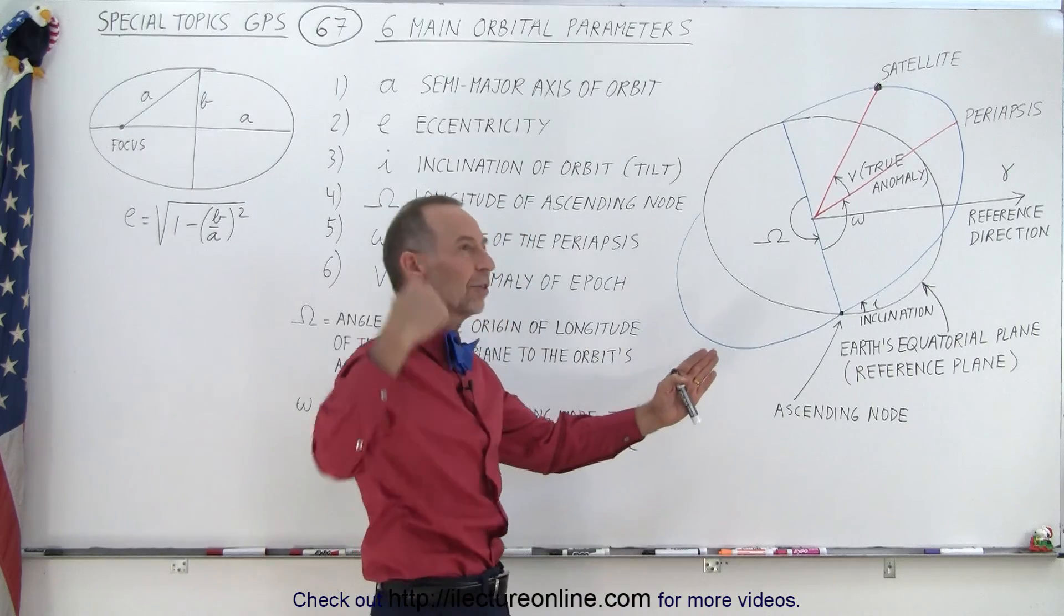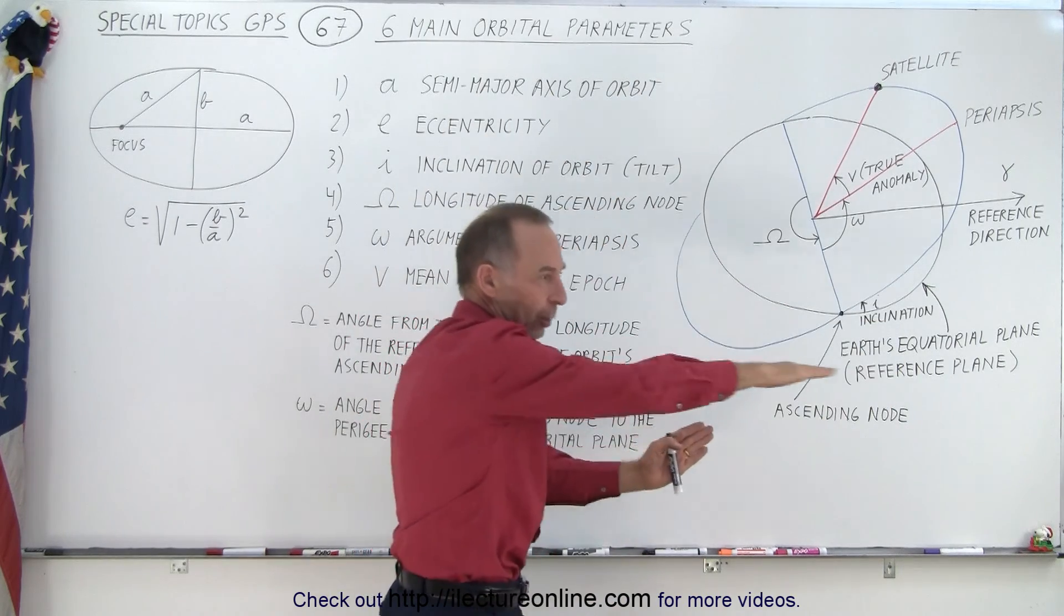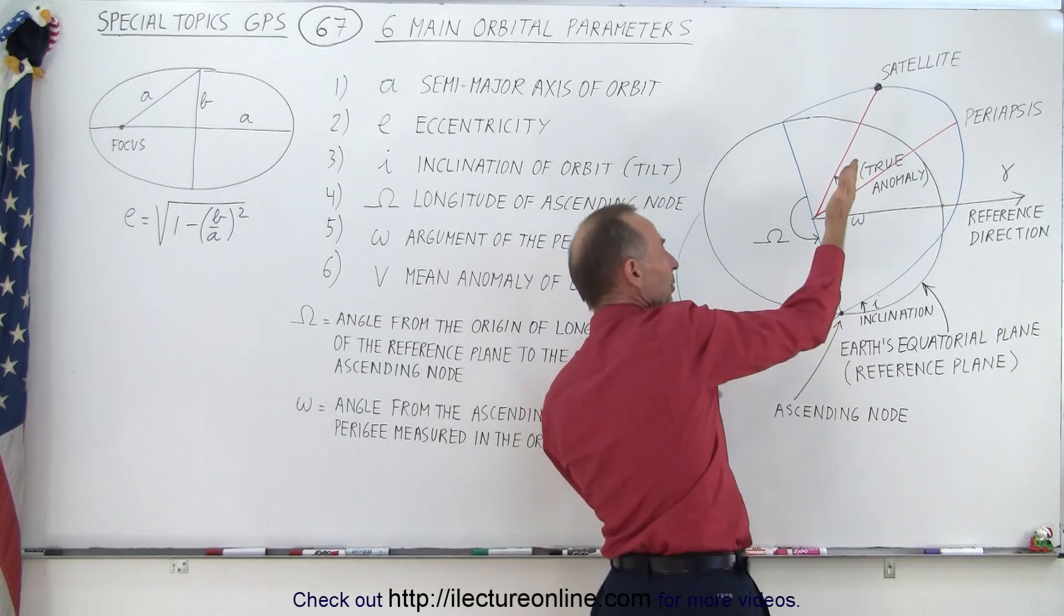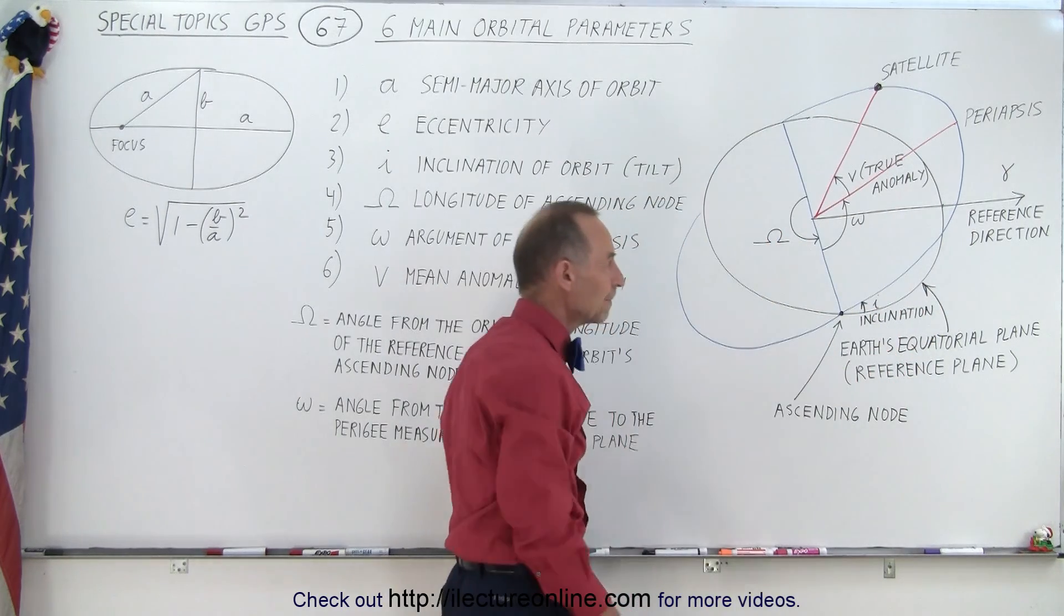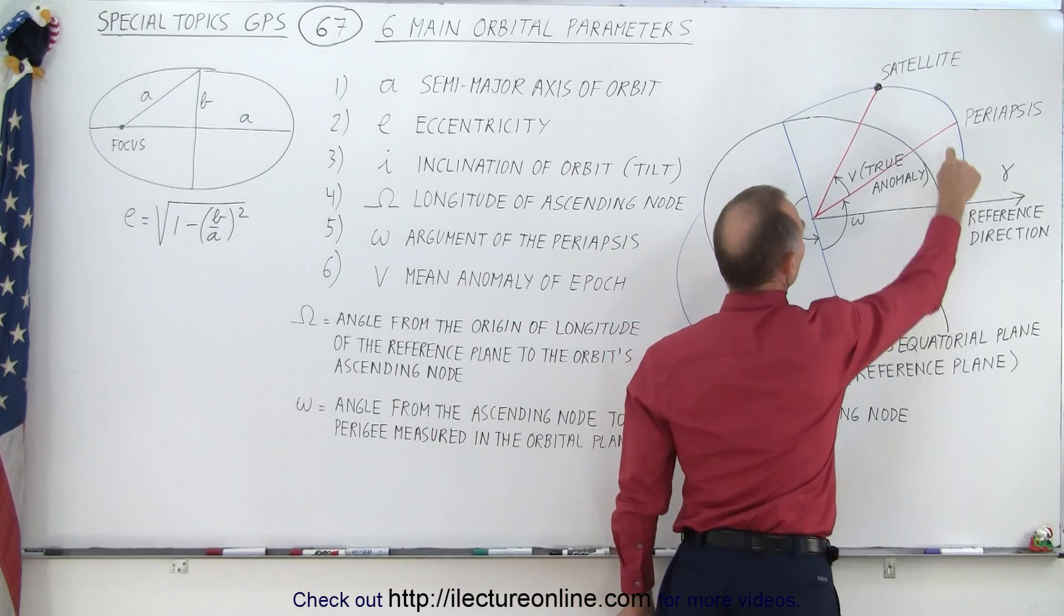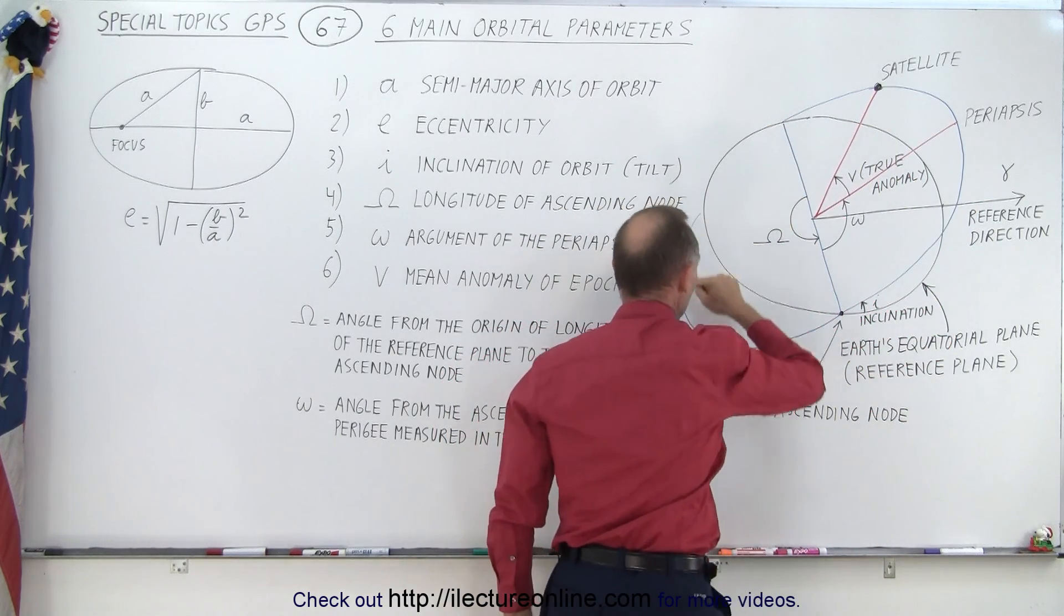And then the orbits of the satellites will be relative to that equatorial plane. So this blue line here represents a tilted orbit relative to the equatorial plane. You can see then that sometimes the satellite will be above the equatorial plane and sometimes the satellite will be below the equatorial plane.